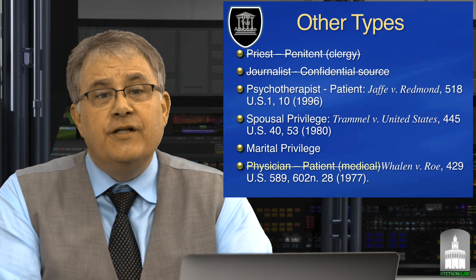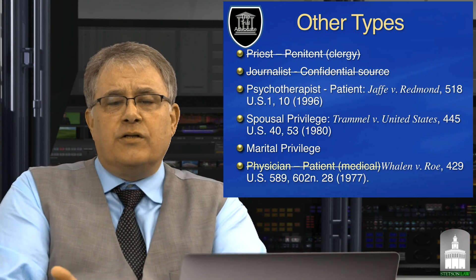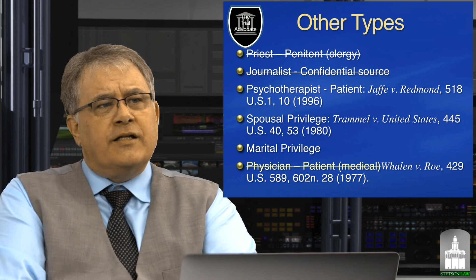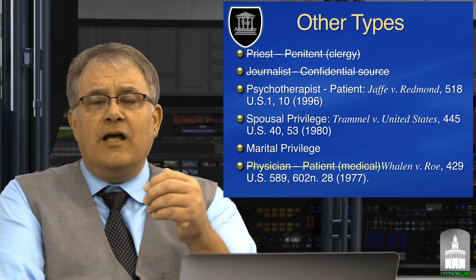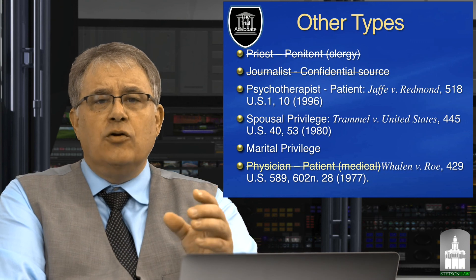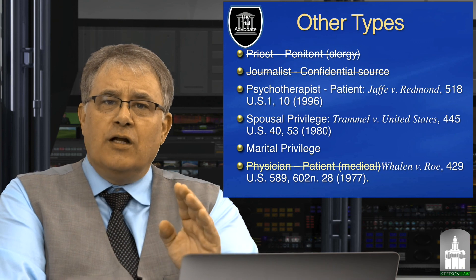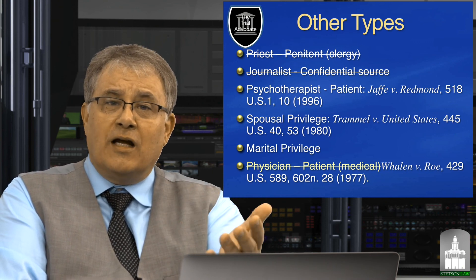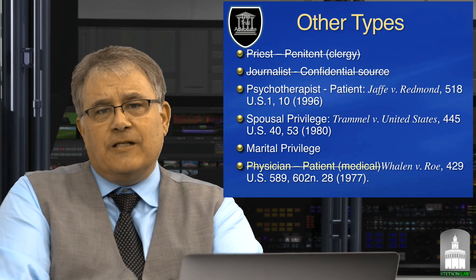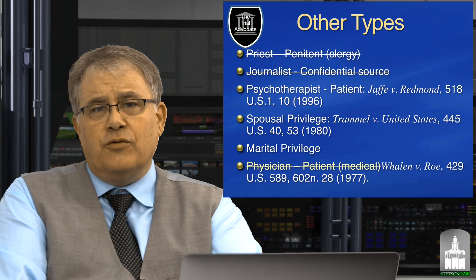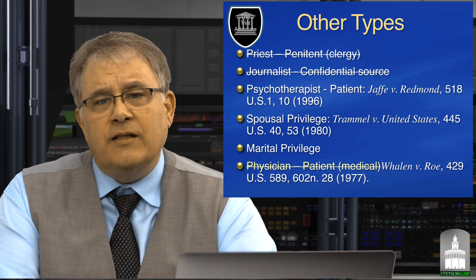There is also no physician-patient privilege in federal court when it comes to medical treatment — that's Whalen v. Roe, a Supreme Court case from 1977. You don't have a right to prevent a doctor from disclosing information about you at trial, unless the doctor is a psychotherapist, psychologist, or psychiatrist providing treatment to you as a victim of some sort of abuse. In that instance, you actually do have the privilege — that's Jaffee v. Redmond, a Supreme Court case from 1996.